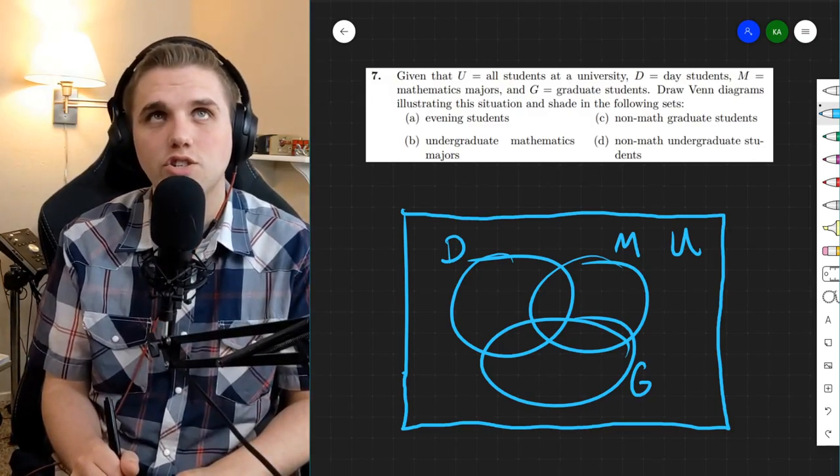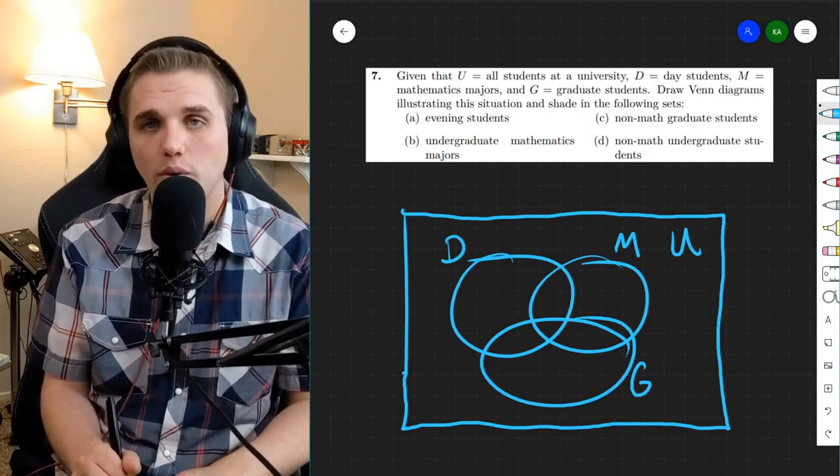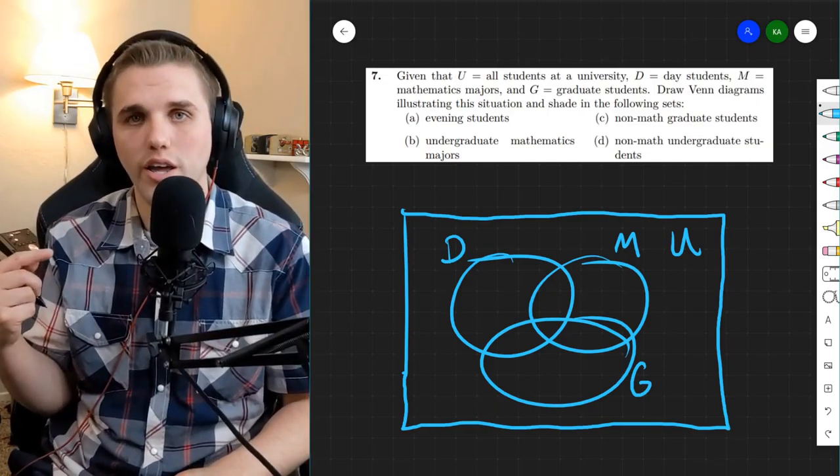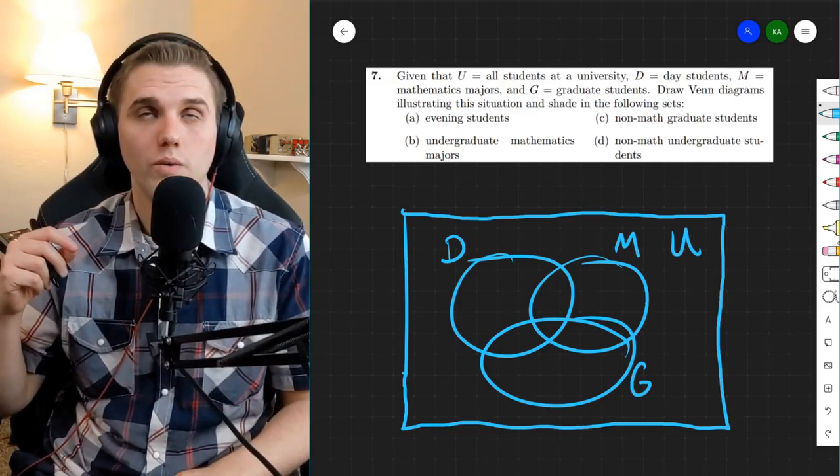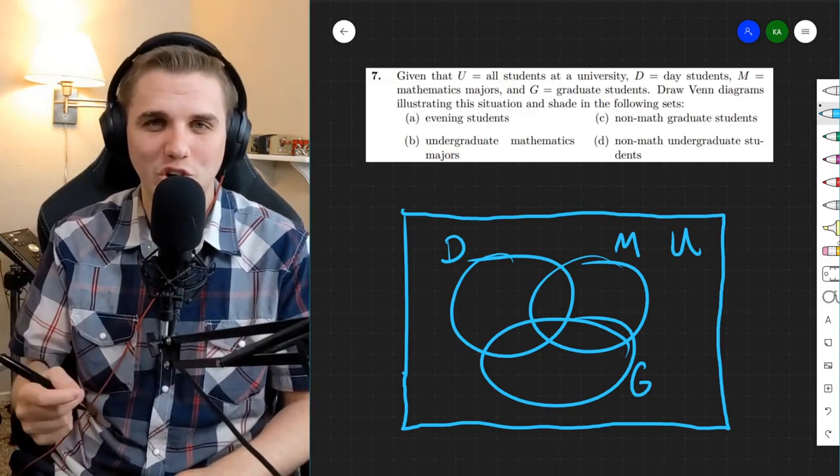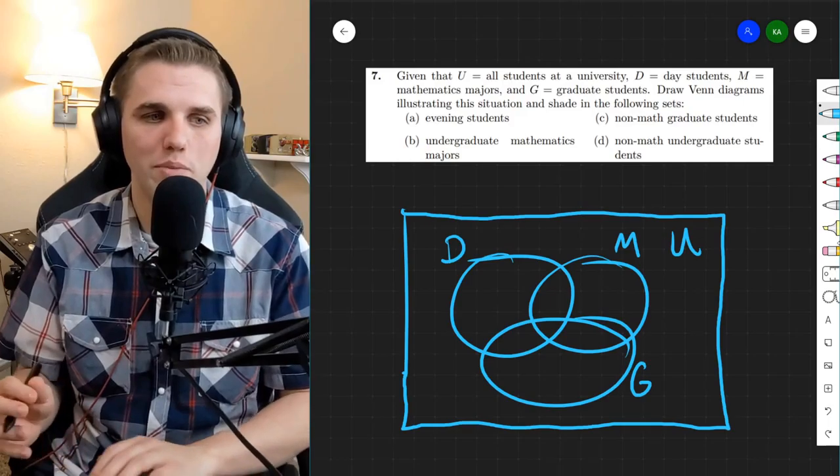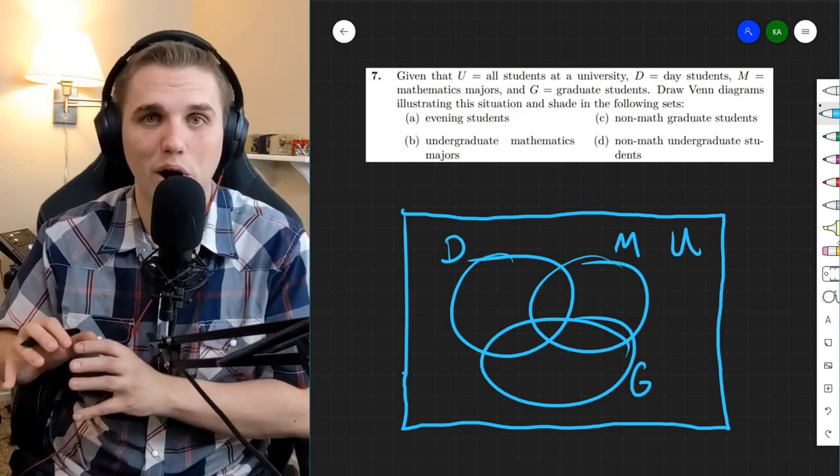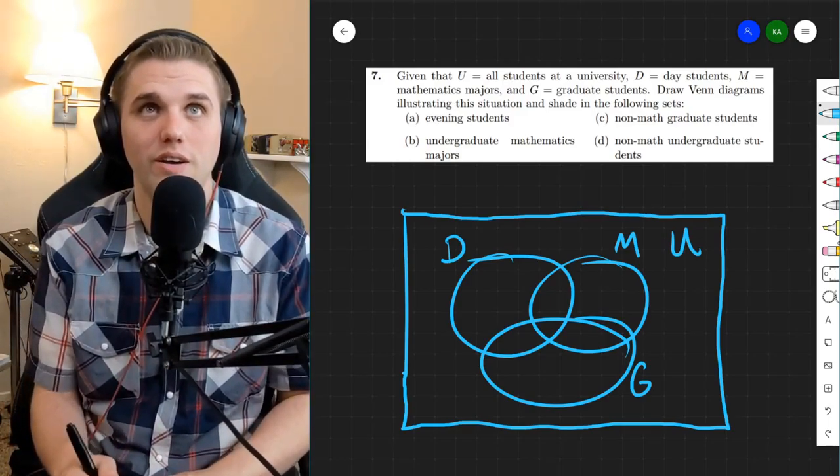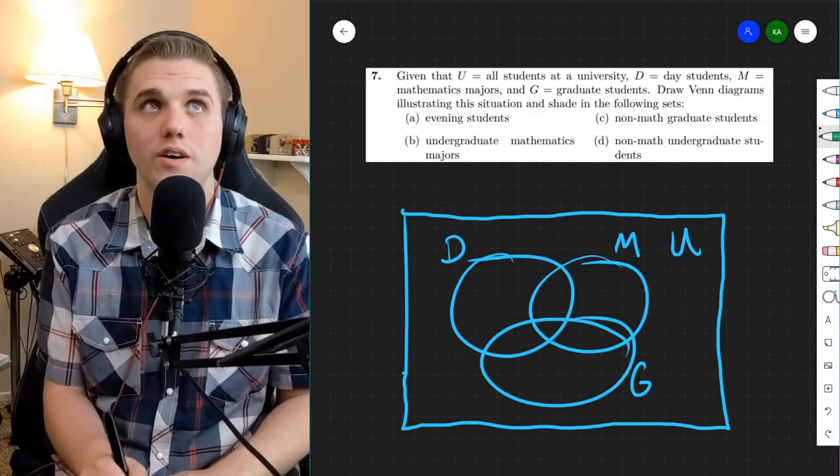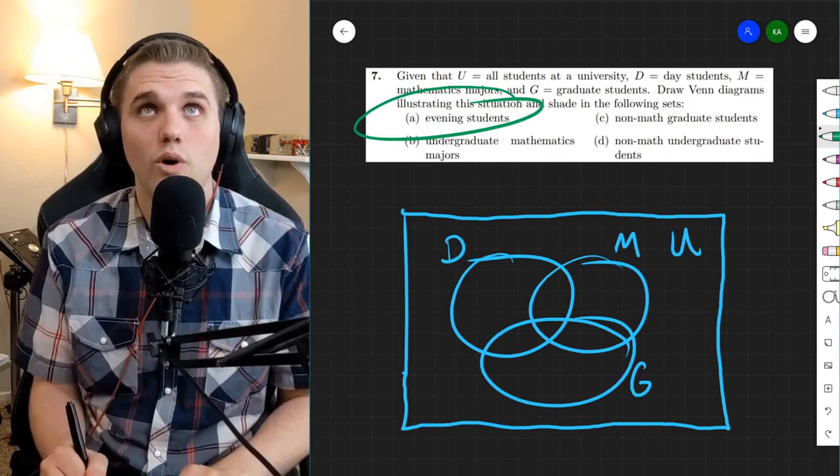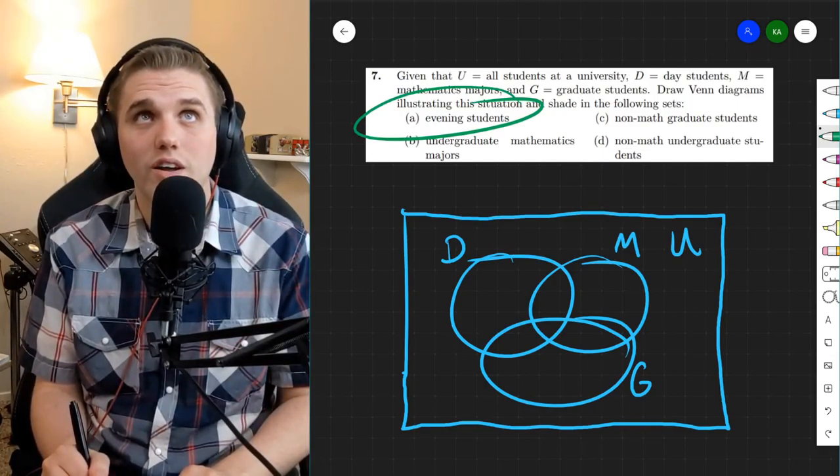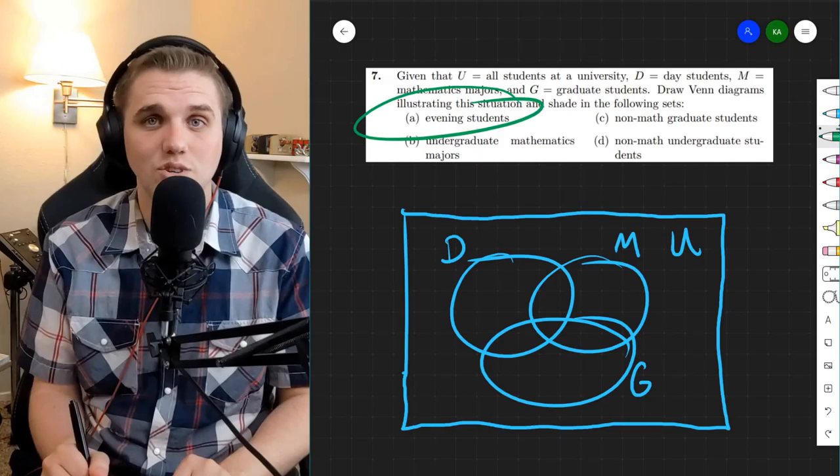So let's try to shade the following sets. We're going to try to interpret what these words mean in terms of this Venn diagram. We're going to be projecting this applied problem onto this picture. So let's start with evening students. Well, evening students are not day students.